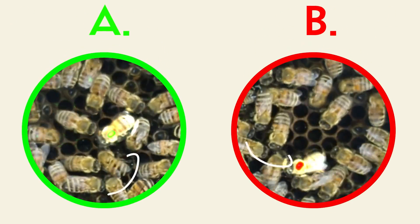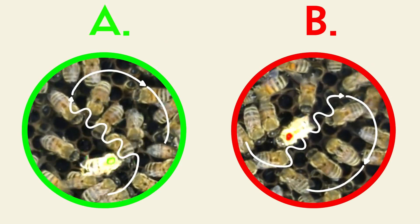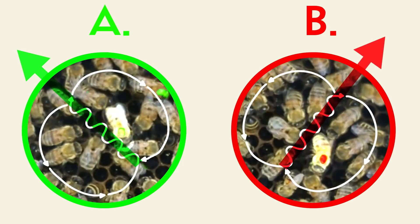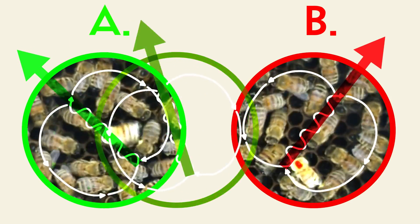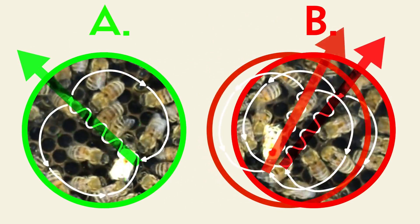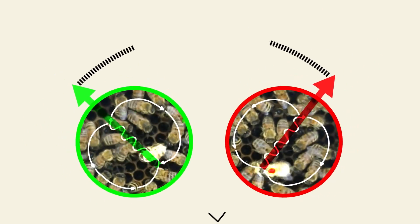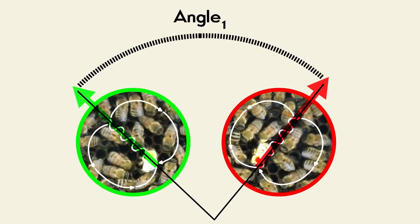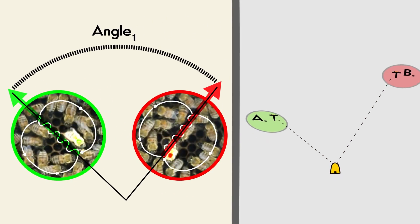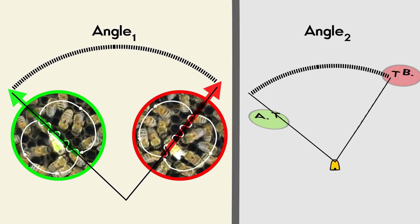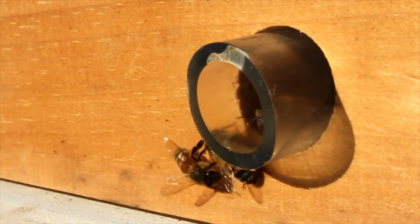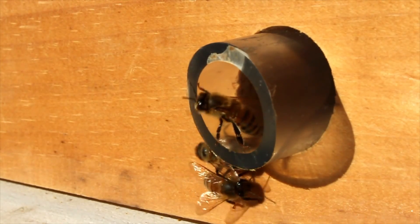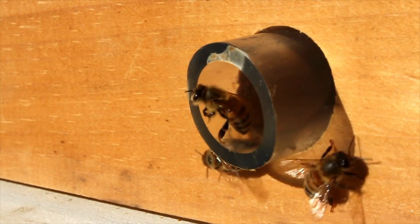While both sets of bees perform the classic figure eight dance, the orientation of the dances is offset between the two groups. Bees returning from one feeder perform a rotated version of the dance done by the other bees. Incredibly, the angle of rotation precisely matches the angle between the feeding stations and the hive. This must be a clue to the mystery of how the bees are able to share information about the location of food.